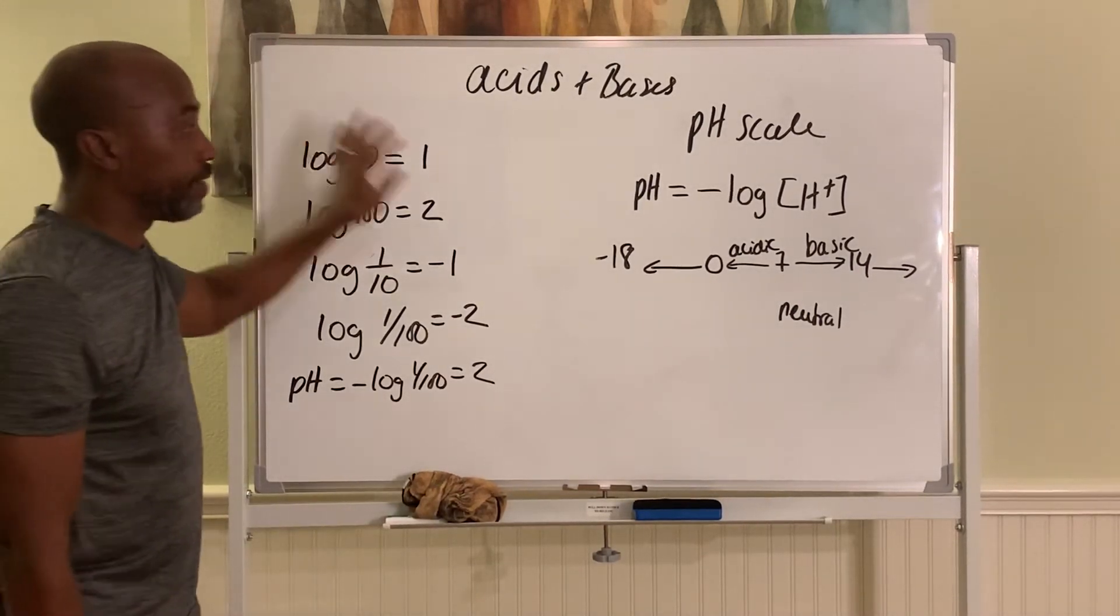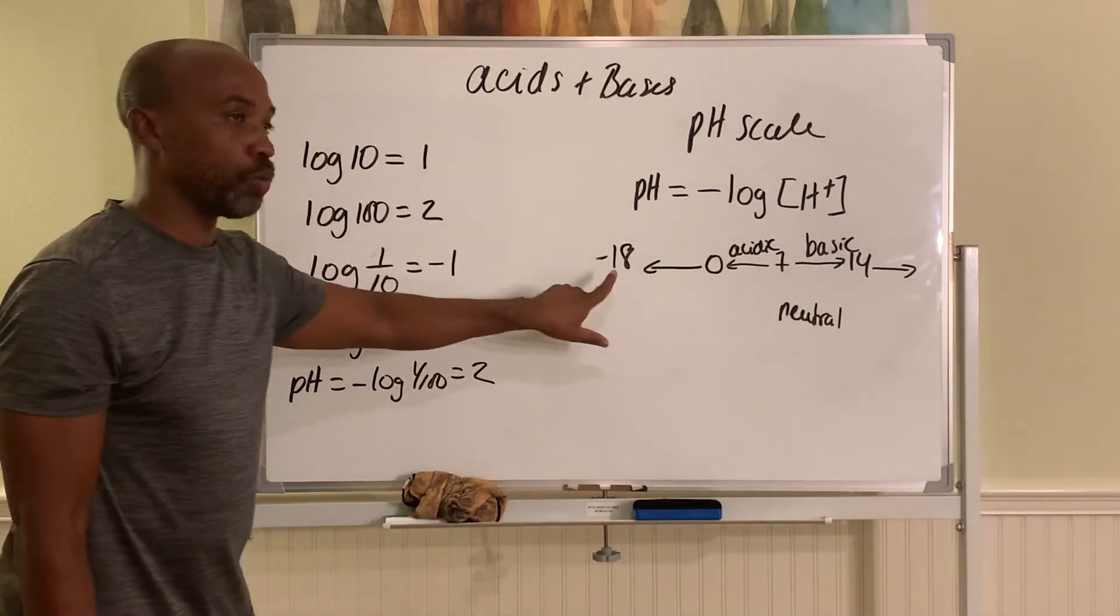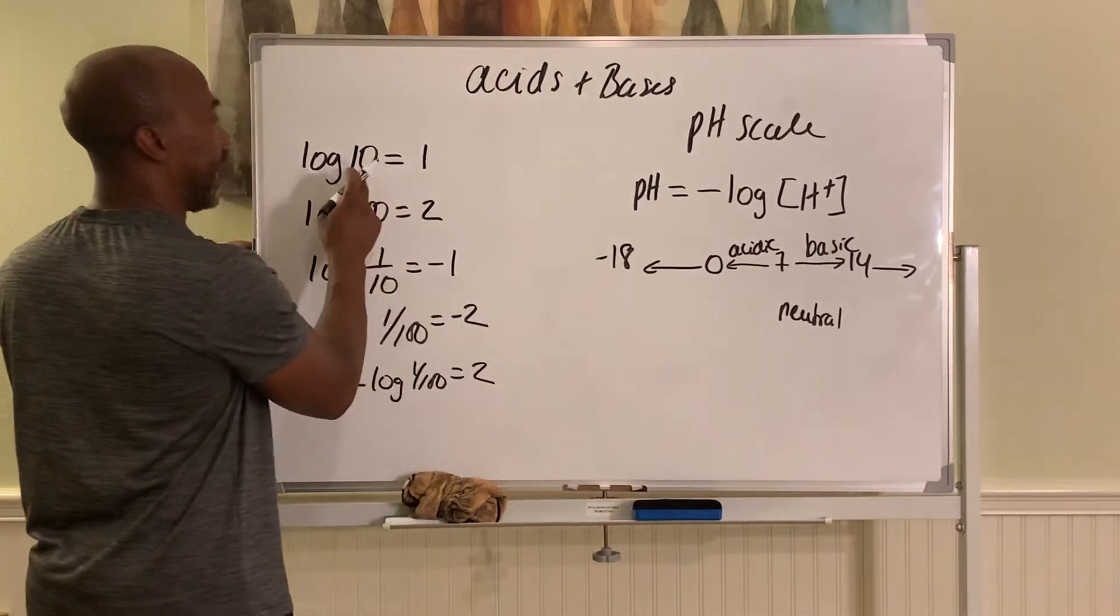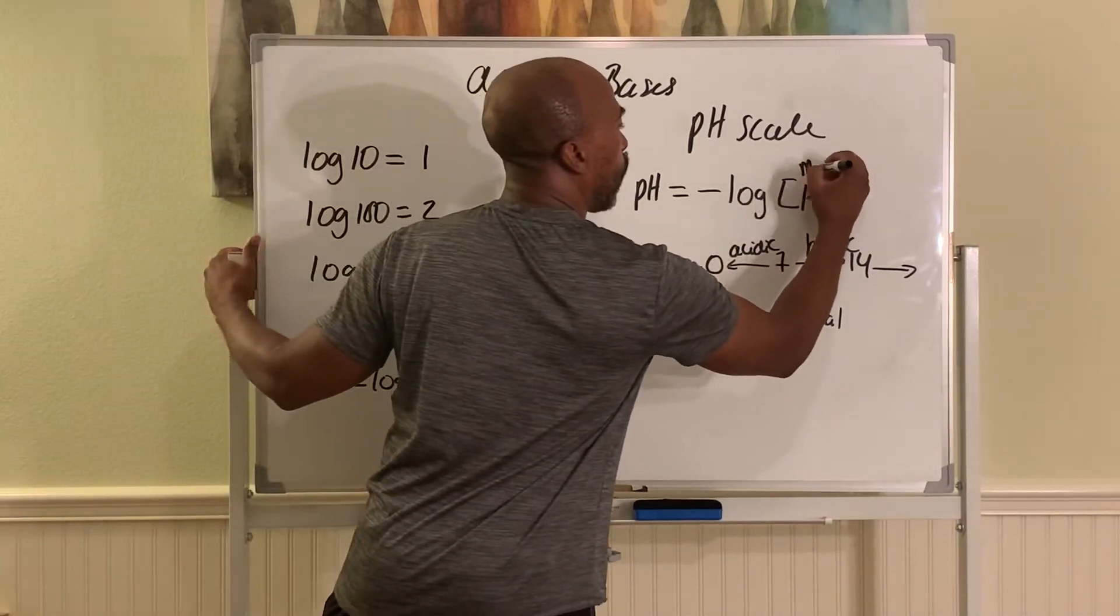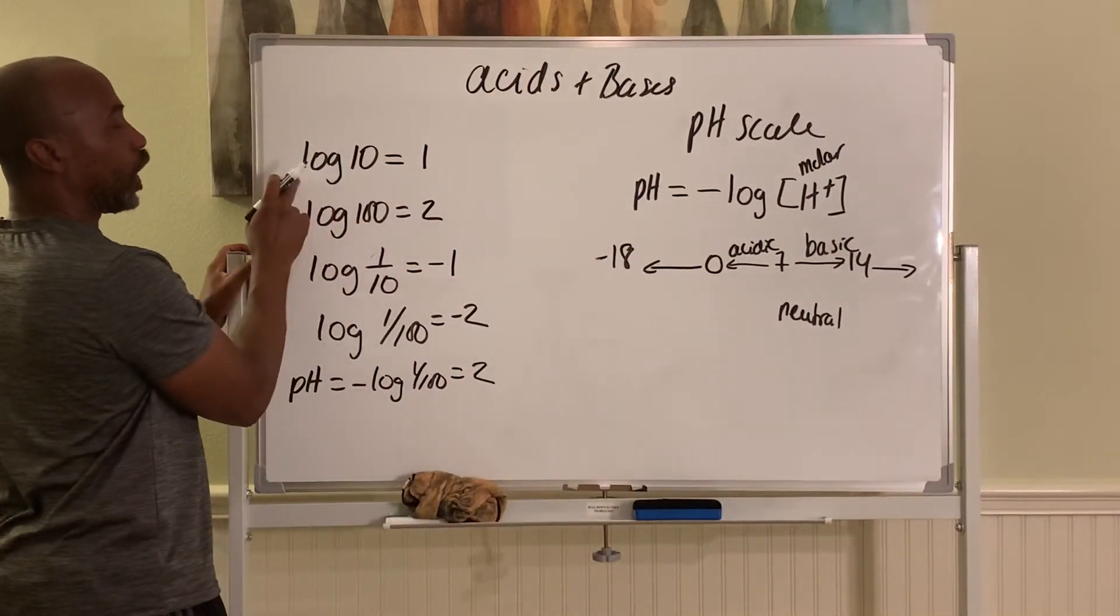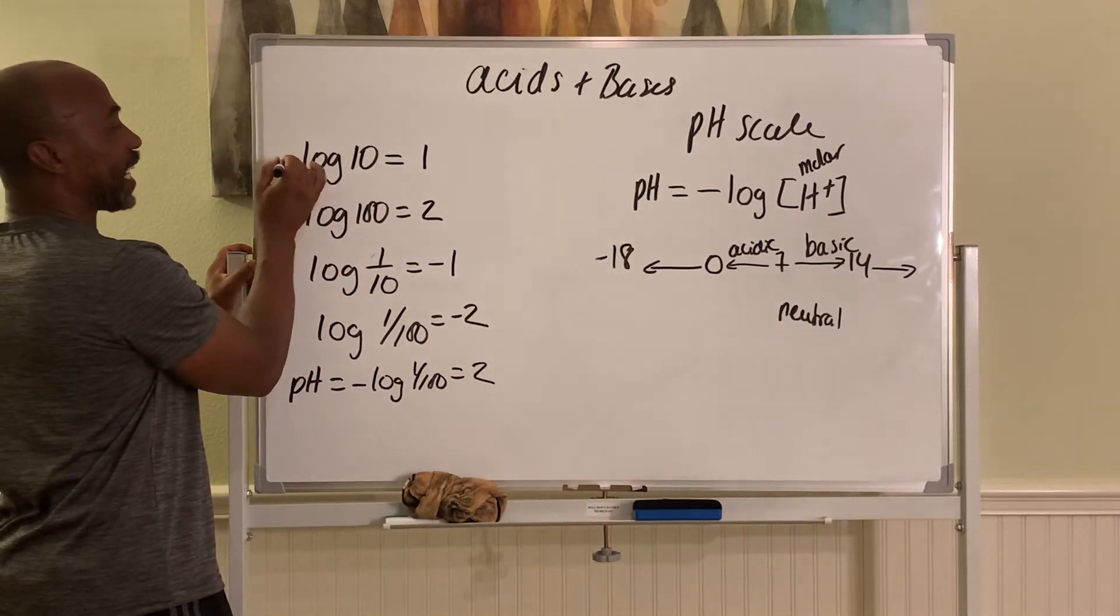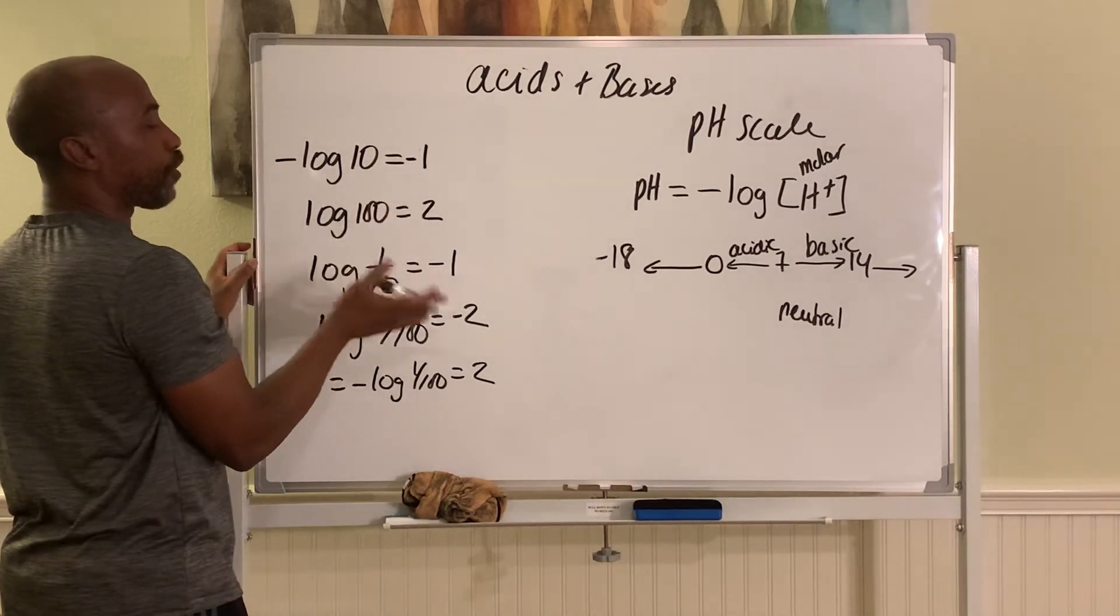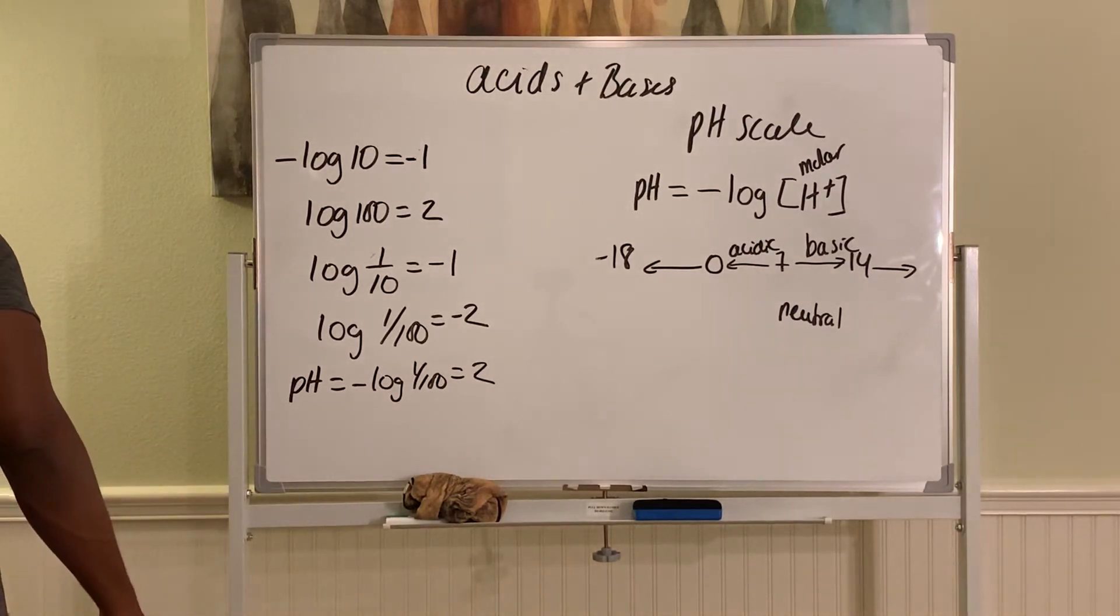But again, it can be negative. If the concentration is greater than 1, it would be a negative number. For example, if the concentration of H plus is 10 molar - this is referring to the molar concentration of H plus - so if it's 10, then the log of 10 is 1, and the negative log of 10 becomes negative 1. So it can become a negative number if it's ever above 1.